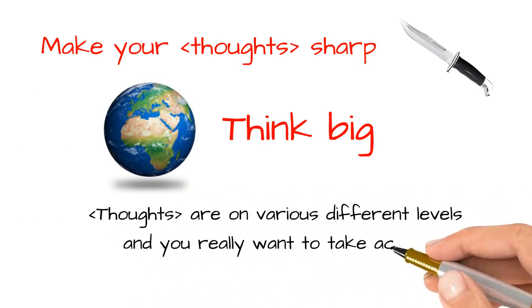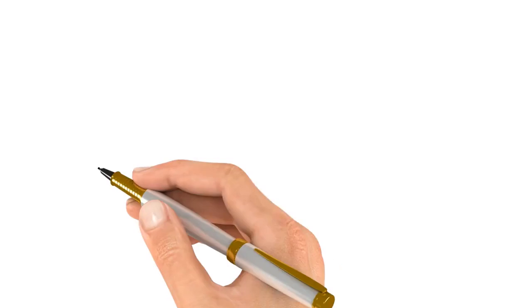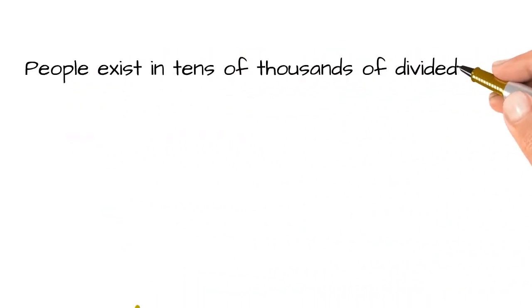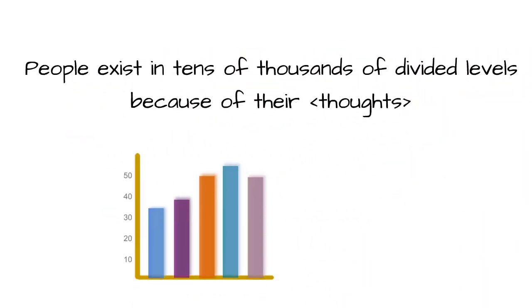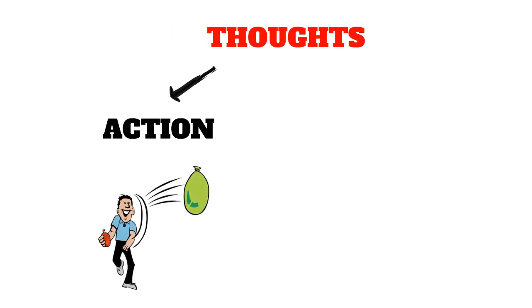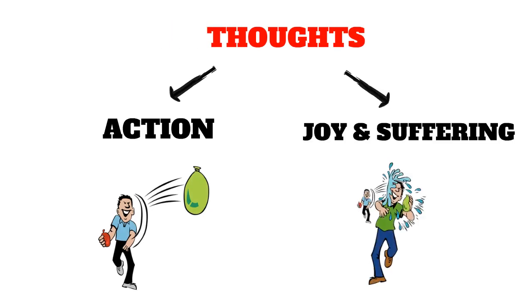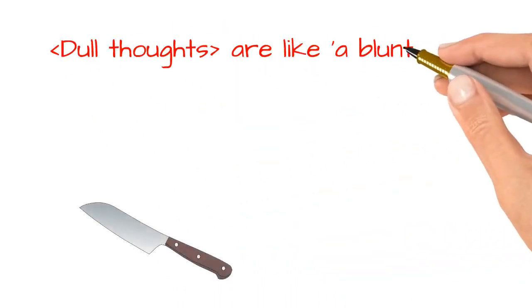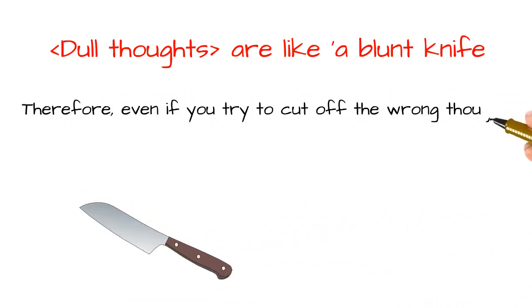Thoughts are on various different levels, and you really want to take action after thinking well. People exist in tens of thousands of divided levels because of their thoughts. People take action according to their thoughts and also receive joy or suffering because of their thoughts.